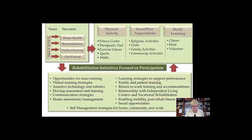Take a moment to look at this slide. All of the programs listed — opportunities for mass training, virtual training strategies, assistive technology and robotics, driving assessment and training, communication strategies, home assessment and management, strategies to support learning for performance, family and patient training, return to work training and accommodations, relationships with independent living centers and vocational rehabilitation, enabling mobility, post-rehab fitness, and social opportunities and self-management strategies for home, work and community — all these programs required data to guide the need for the program and outcome data to show the effectiveness of the program in returning people to community life.